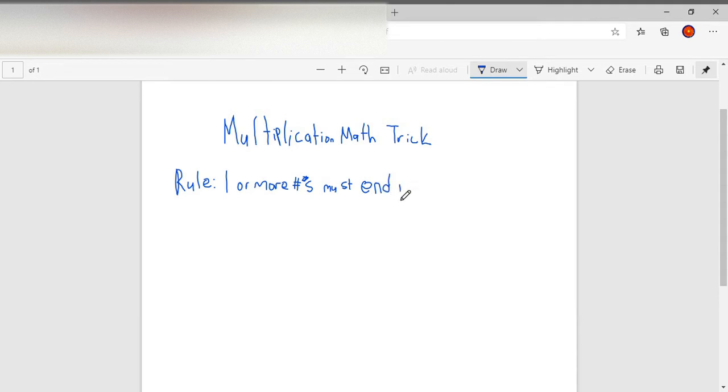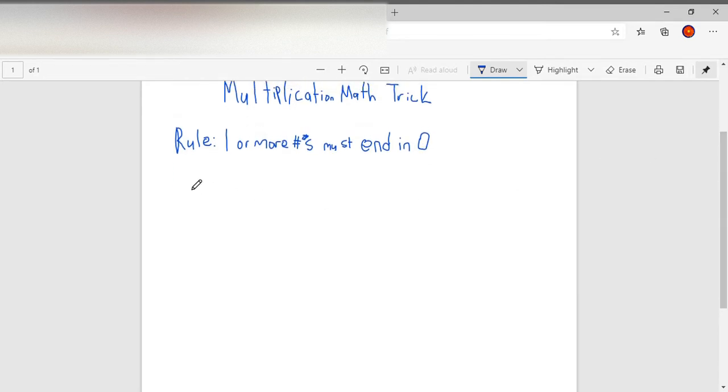I'm gonna make an example of what I mean. So I'll do 135,000 times 300. I'm gonna solve it the normal way first, then I'll do the trick way.